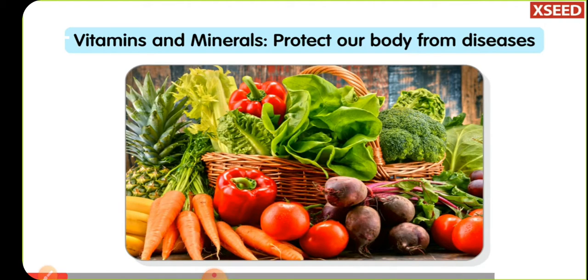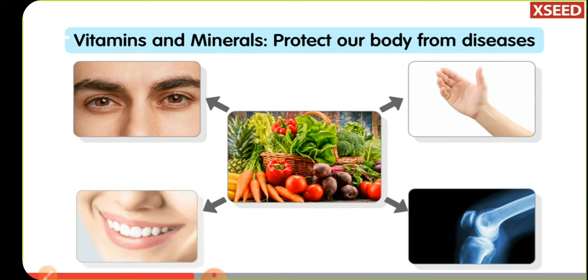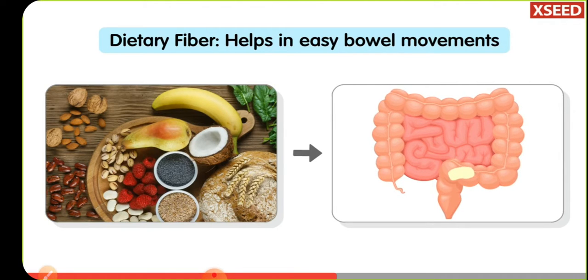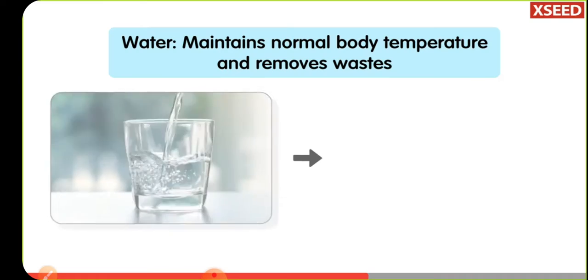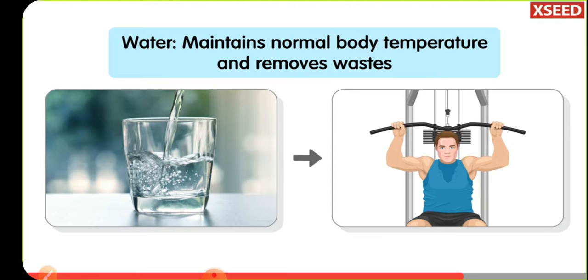Vitamins and minerals are nutrients that help to protect our body from diseases. They keep our eyes, skin, and bones healthy. Dietary fiber is a type of carbohydrate that mainly helps in easy bowel movements. Water is also important for our body — it helps to keep our body temperature normal and remove wastes from the body.